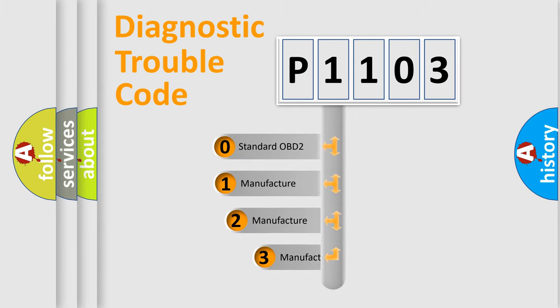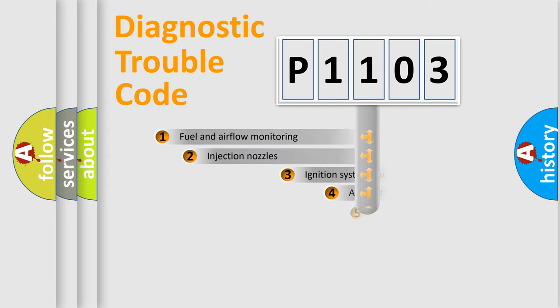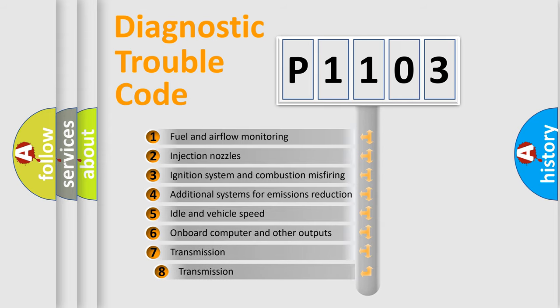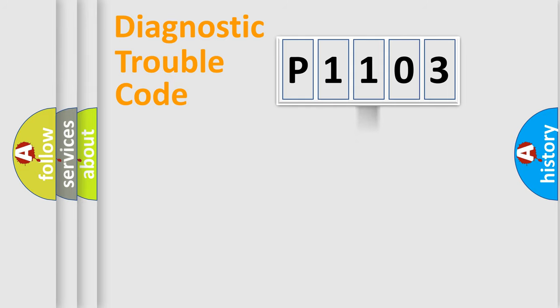If the second character is expressed as zero, it is a standardized error. In the case of numbers 1, 2, or 3, it is a more prestigious expression of the car-specific error. The third character specifies a subset of errors. The distribution shown is valid only for the standardized DTC code.